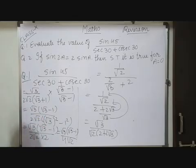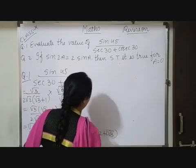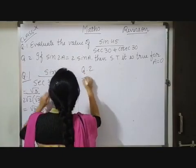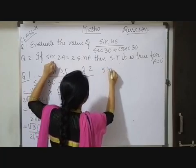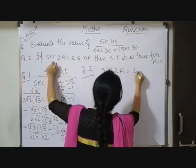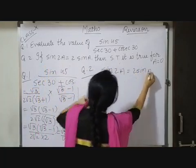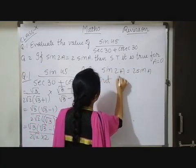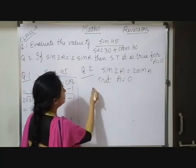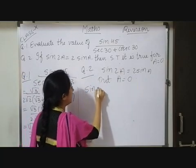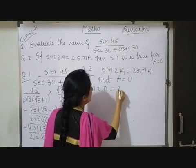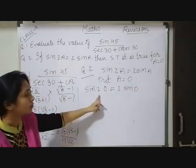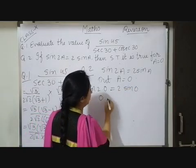Now we will solve the second question. In the second question, they have given sin 2A equals 2 times sin A. Then show that it is true for A equals 0. So here, put A equals 0. If I substitute A equals 0, we will get sin 2 into 0, which equals 2 into sin 0. So sin 0 angle, and that value is 0.